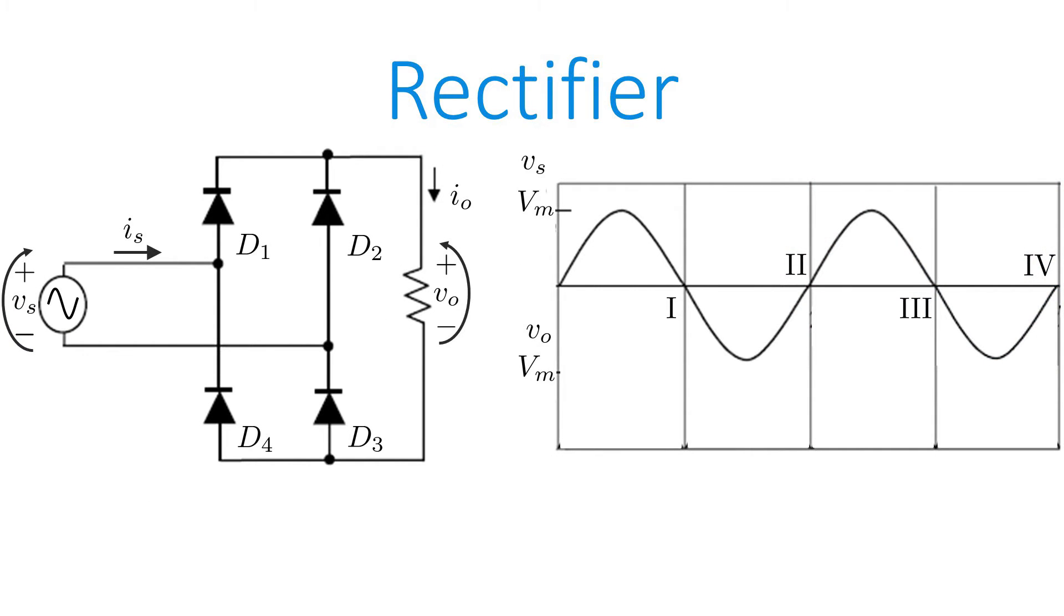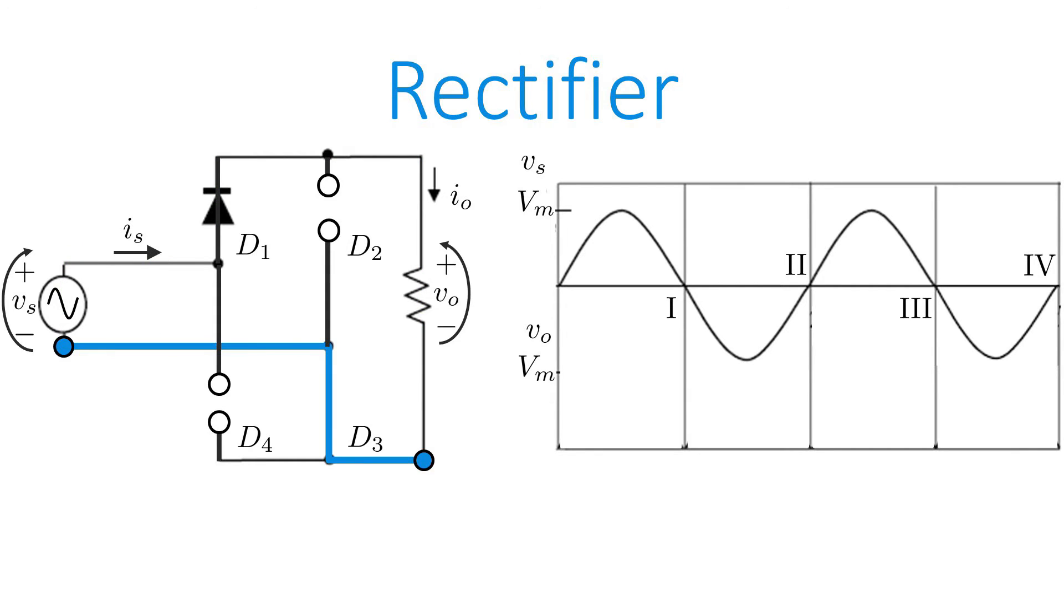When the voltage signal is positive, which corresponds to time periods 1 and 3, diodes D1 and D3 will conduct, and diodes D2 and D4 will block the current because of the positive direction of the current. Notice that the direction of the arrow in both the input and output voltage goes from the node highlighted in blue to the node highlighted in red. This means that both voltages are the same in magnitude and direction, therefore the output voltage is the same as the input voltage.